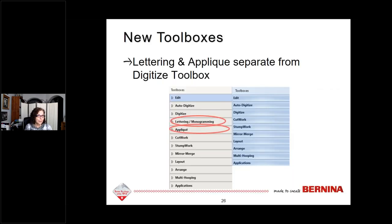There are new toolboxes in version 9. Compared to version 8, there is now a Lettering and Monogramming toolbox as well as an Applique toolbox. These tools have been taken out of the digitize toolbox and given their own separate toolboxes. If you do a lot of applique, all those applique tools are housed together. Likewise, the Lettering and Monogramming toolbox lets you quickly get started with lettering or monogramming.